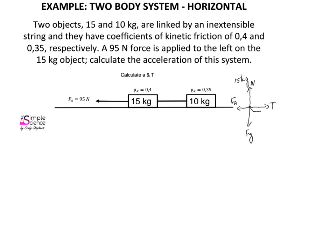We have been told there is a coefficient of friction, which means there is also a frictional force. We can do the same for our 10 kilogram object, where there is a force of gravity acting downward, a normal force acting upward, a frictional force acting backwards, and a tension force pulling it to the left.